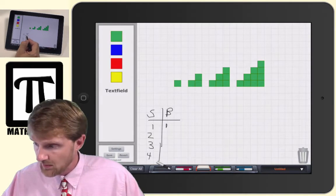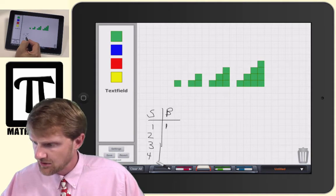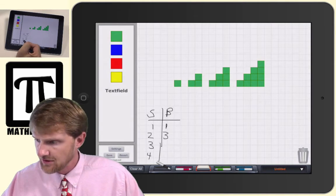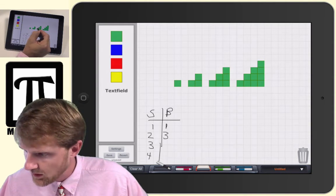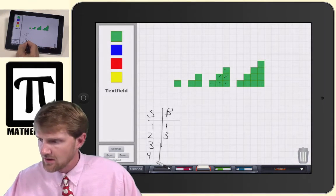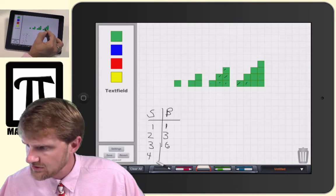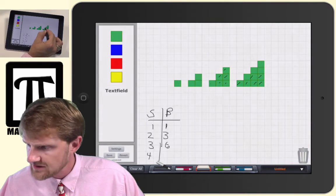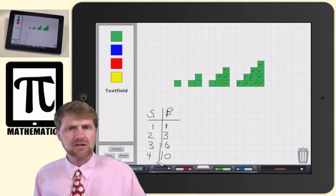And then the fourth one as well. So, in the first one, there was one block. In the second staircase, there are three blocks. In the third staircase, there are six blocks. One, two, three, four, five, six. And then in the fourth staircase, there are one, two, three, four, five, six, seven, eight, nine, ten. There are ten blocks in that one.